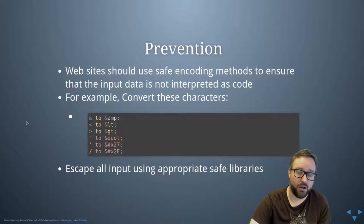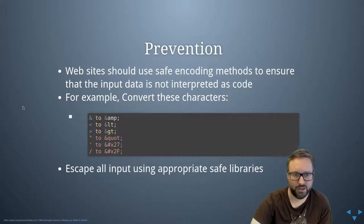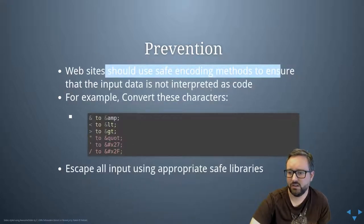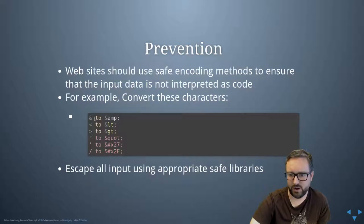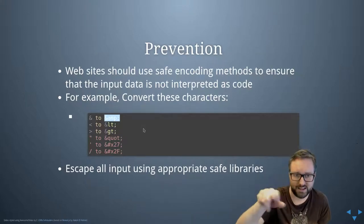If you have actual logic inside the client, you can also check there before you use it — for example in a modern React-type system. One way you can prevent injection is to use safe encoding methods. For example, if you've got an ampersand, you can send &amp; instead, which is the HTML entity for an ampersand, so it gets rendered as an ampersand rather than as code.